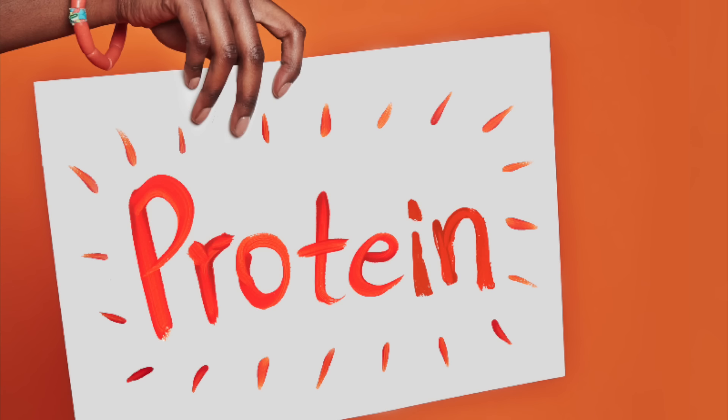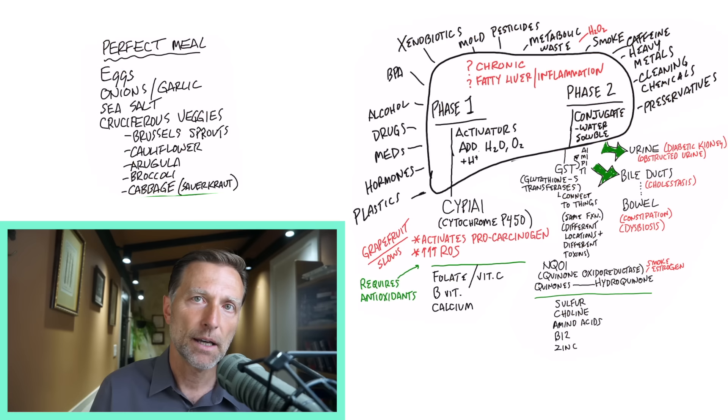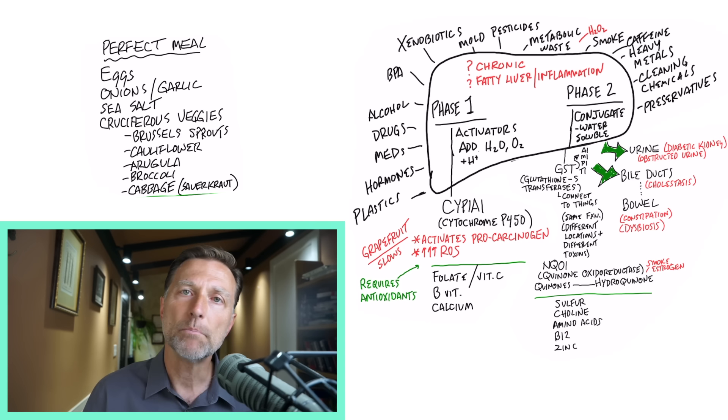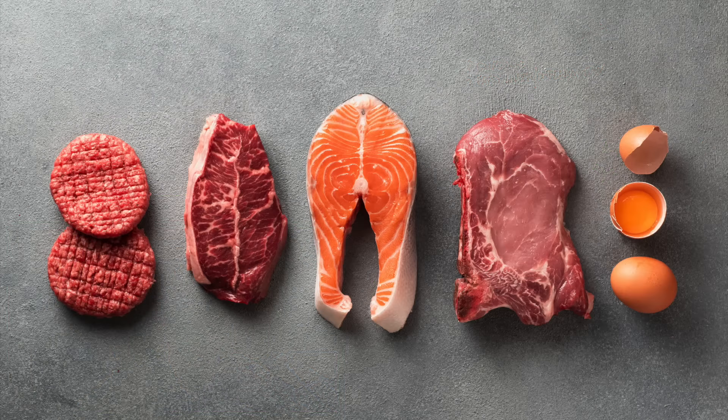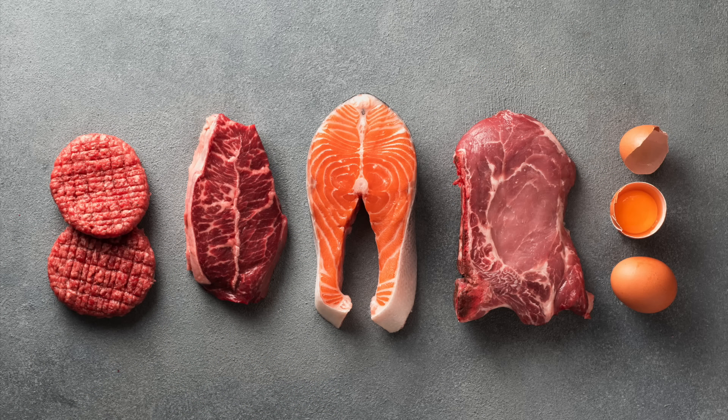You definitely want enough protein too with complete amino acids because all these enzymes are made from amino acids. So it's very, very important to have some animal meat or eggs with your meal. And to put the icing on the cake, I probably shouldn't talk about cake,